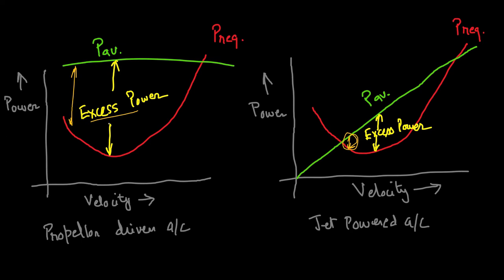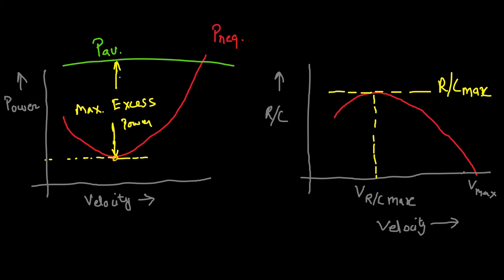Considering the excess power near the stall speed: for a propeller-driven aircraft there is high excess power available just above V-stall, whereas for a jet-powered aircraft the excess power just above V-stall is quite low. This high excess power gives a comfortable safety margin for a propeller-driven aircraft during landing approach in case a sudden wave-off is required. For a propeller-driven aircraft, since power available is nearly constant, maximum excess power occurs at the point of minimum power required, giving maximum rate of climb at that velocity.